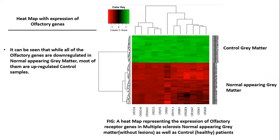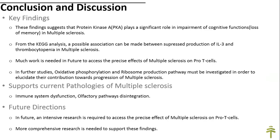A heatmap with expression of olfactory genes clearly shows that in the validation dataset, olfactory genes are downregulated in normal appearing gray matter while most are upregulated in control samples. In conclusion, the key findings are that protein kinase A plays a significant role in impairment of cognitive functions, and a possible association can be made between suppressed production of interleukin-3 and thrombocytopenia in multiple sclerosis. In future, much work is needed to assess the precise effects of MS on pro-T cells, and intensive research with more samples is required to support these findings. Thank you.